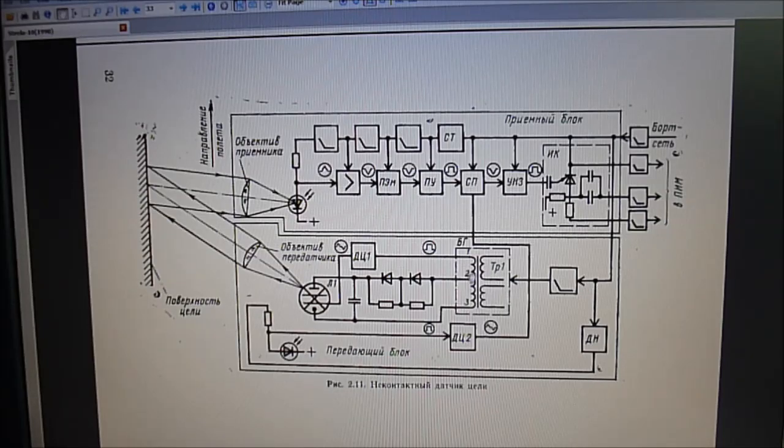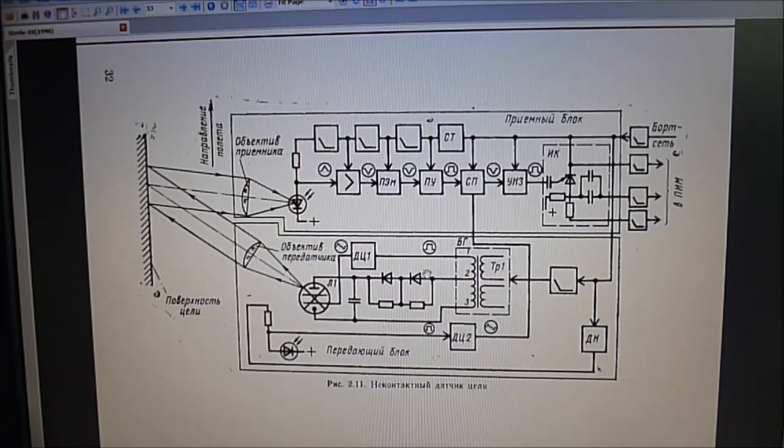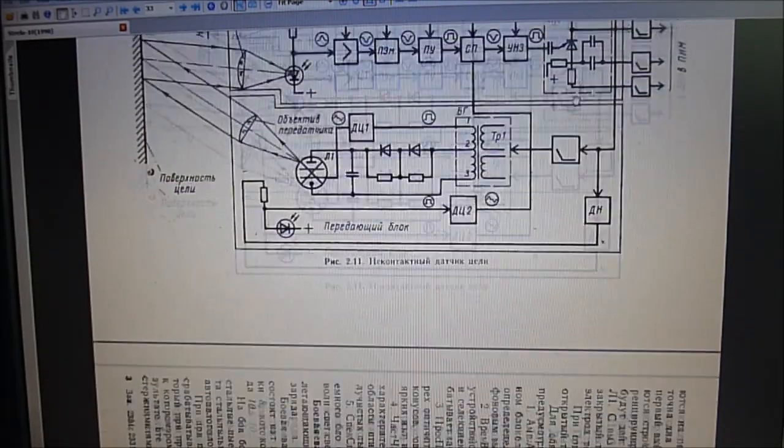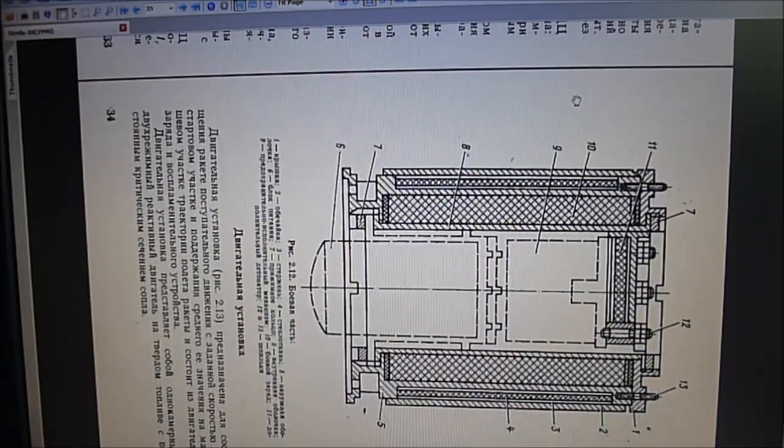There is a transformer somewhere. Here is a feedback photodiode. And there must be some electronics, but it is probably all in the middle of the unit.